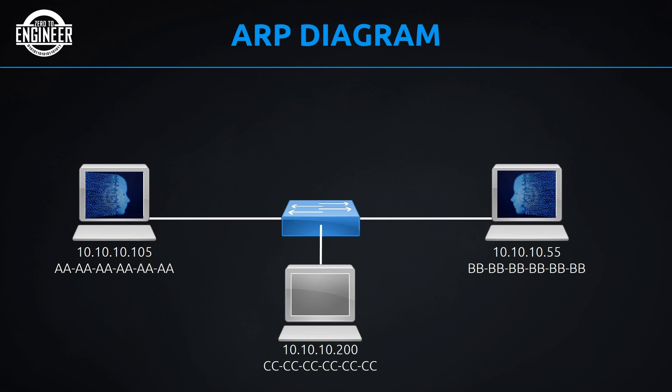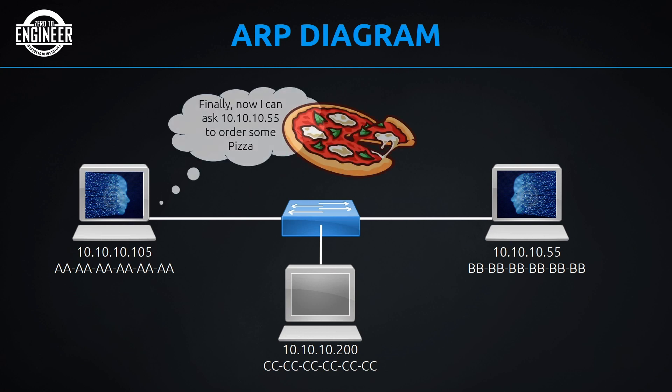That's how ARP works. After the whole process completes, the host on the left finally has what it needs and can communicate with 10.10.10.55 — in this case, to ask it to order some pizza. And that's what pizza has to do with ARP — a little humor to wrap up the diagram.